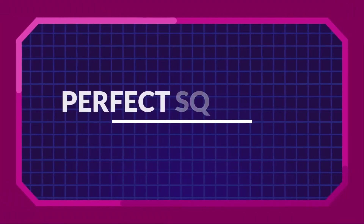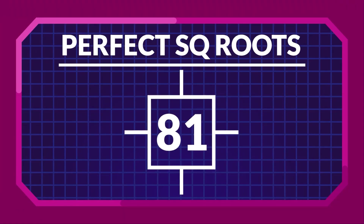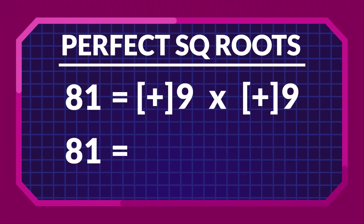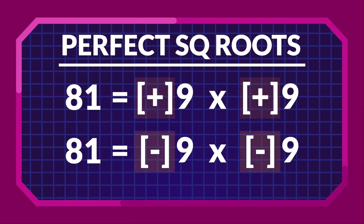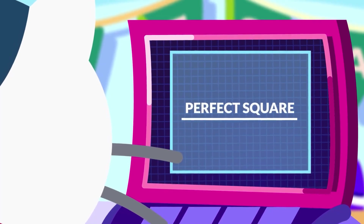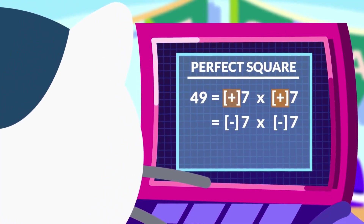All perfect squares have two sets of square roots. Consider a perfect square 81. The product 81 can be obtained by multiplying two sets of integers: 9 times 9 and minus 9 times minus 9. A positive value of 9 multiplied by itself will yield 81, just like a negative value of 9 will. Similarly, we can say that the square roots of 49 are minus 7 and plus 7.